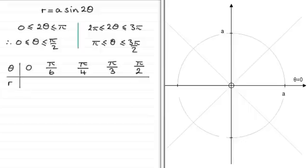So if we build up one table for angles of theta going from 0 to pi over 2, and I've taken pi over 6, pi over 4, pi over 3 as intermediate values.